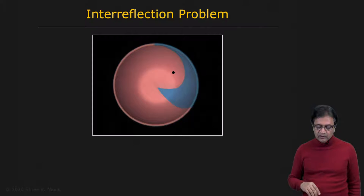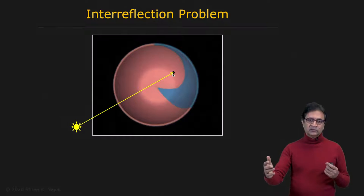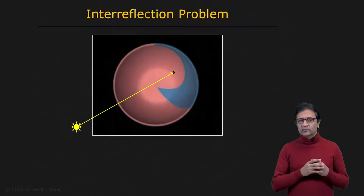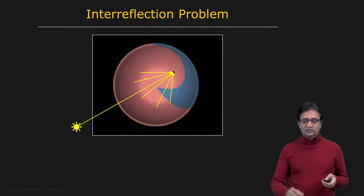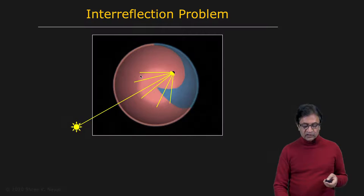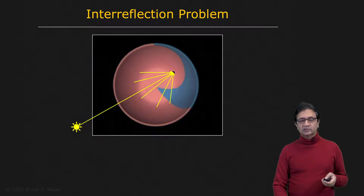You're looking into the cup here. Let's say you're looking at this point right here. This point, of course, receives light from the light source. But in photometric stereo, we assume that the light a surface point receives is only from the light source. In reality, this point is going to receive light from all the points around it on the object — neighboring points which are not light sources — and they reflect some of that light in the direction of this point as well. So this point receives light not only directly from the light source, but also from other points on the object.